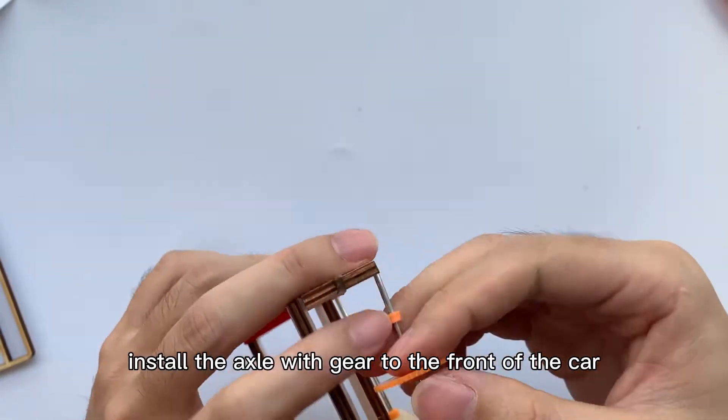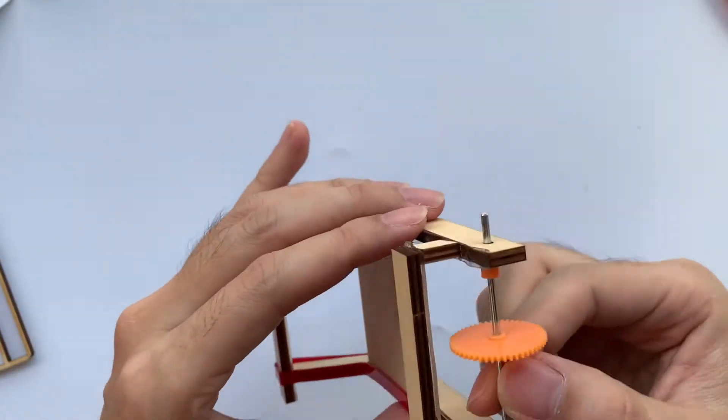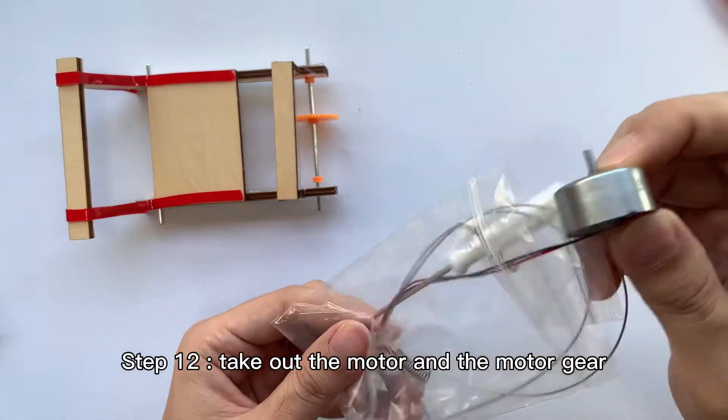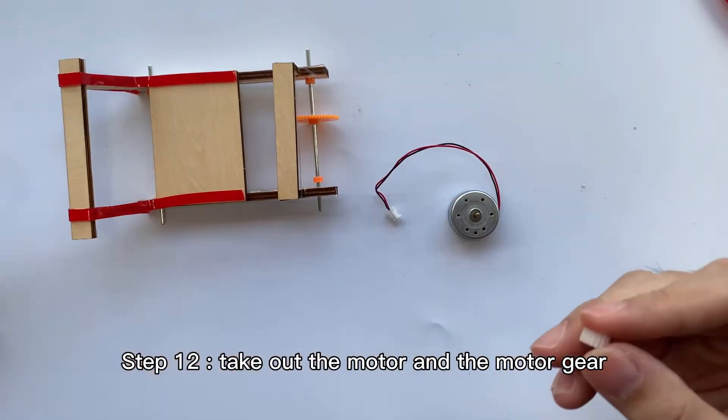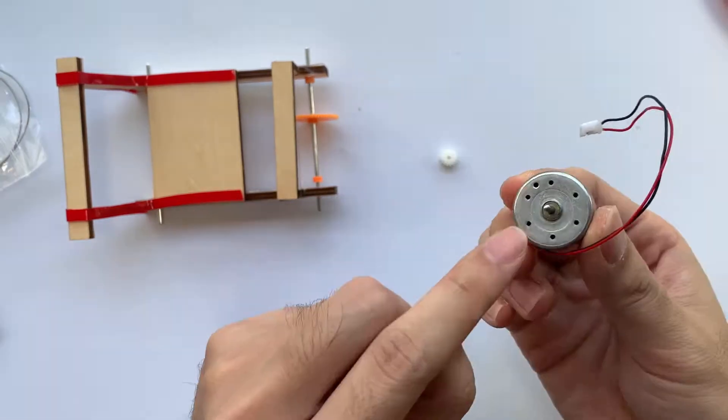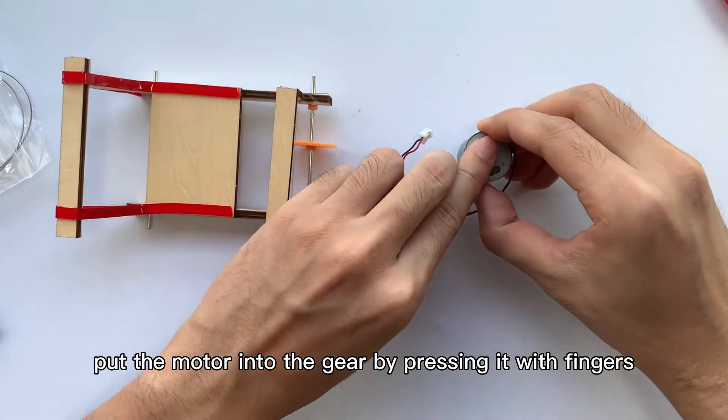Step 11: Install the axle with gear to the front of the car. Step 12: Take out the motor and the motor gear. Put the motor into the gear by pressing it with fingers.